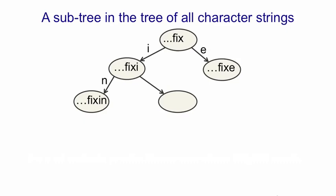In fact, this little subtree will occur many times, but with different things that are represented by that dot, dot, dot before the fix. So this represents that we had a whole bunch of characters, then we had F and then I and then X. And now if we get an I, we're going to go to the left. If we get an E, we're going to go to the right, and so on. So each time we get a character, we move one step down in this tree to a new node.